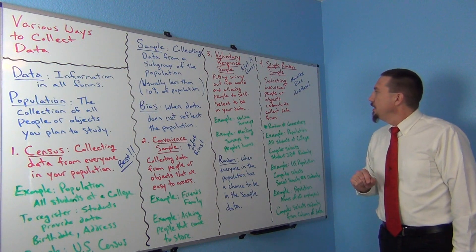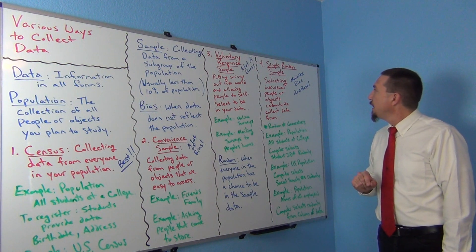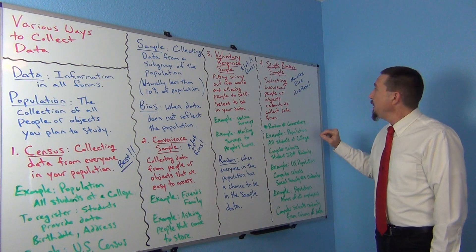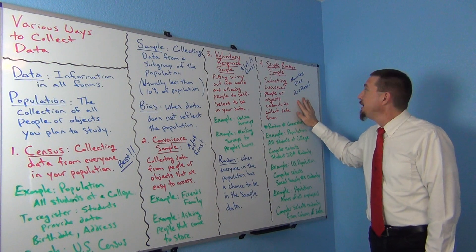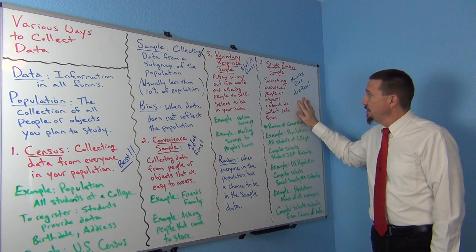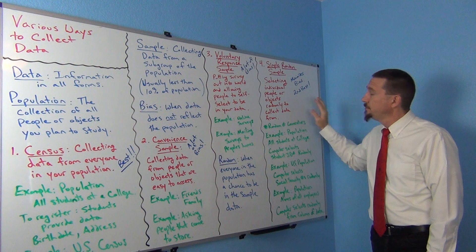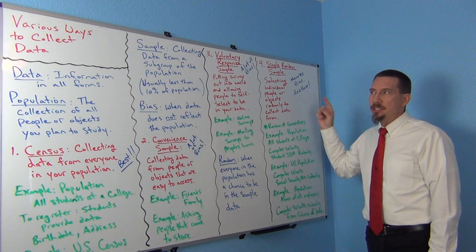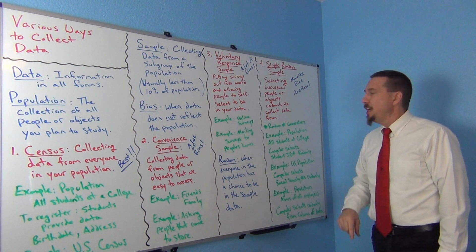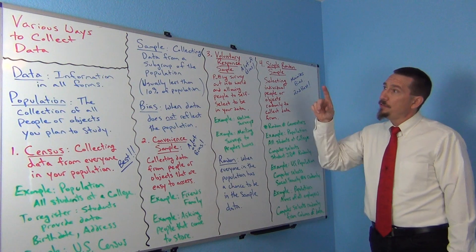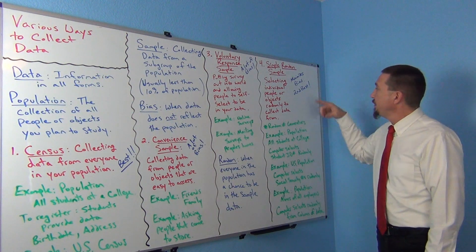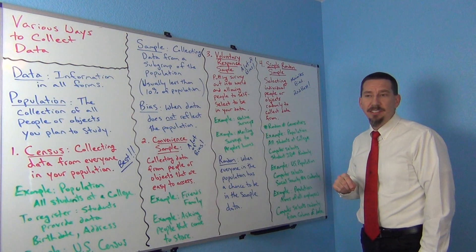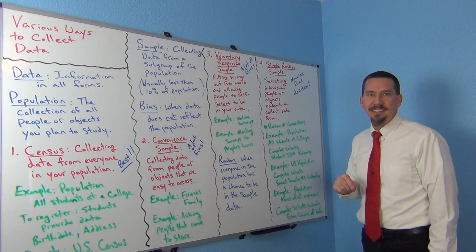A simple random sample is very good — it tends to minimize bias and is really our best sampling technique in terms of collecting data. We'll continue the discussion, and I'll go over a few more ways of collecting data in our next video. This is Matt Tuchel in Intro Stats.